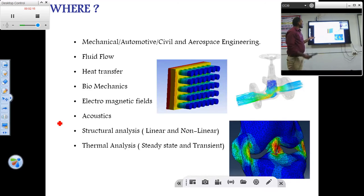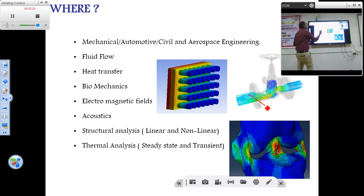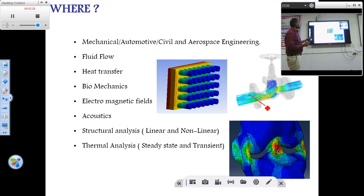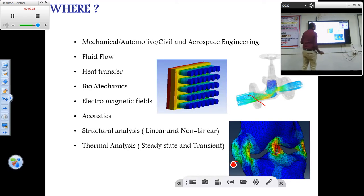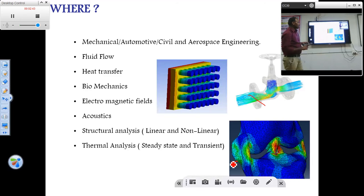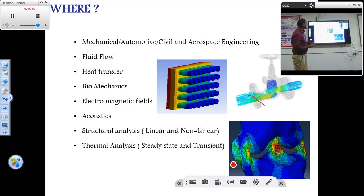In the case of fluid flow, here is an example of flow through gate walls — a typical example of CAE application in fluid flow. There is also the heat transfer application, such as heat transfer through fins. Another example is the stress distribution on a knee due to overweight on a knee. Other applications include electromagnetic, acoustic, and structural analysis.